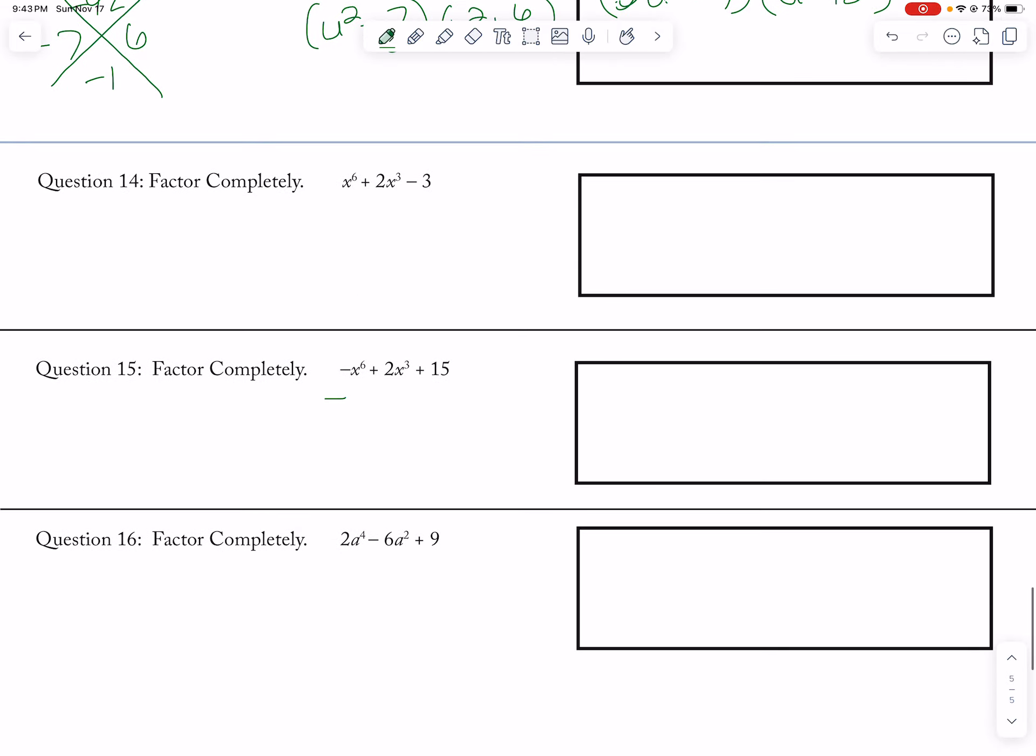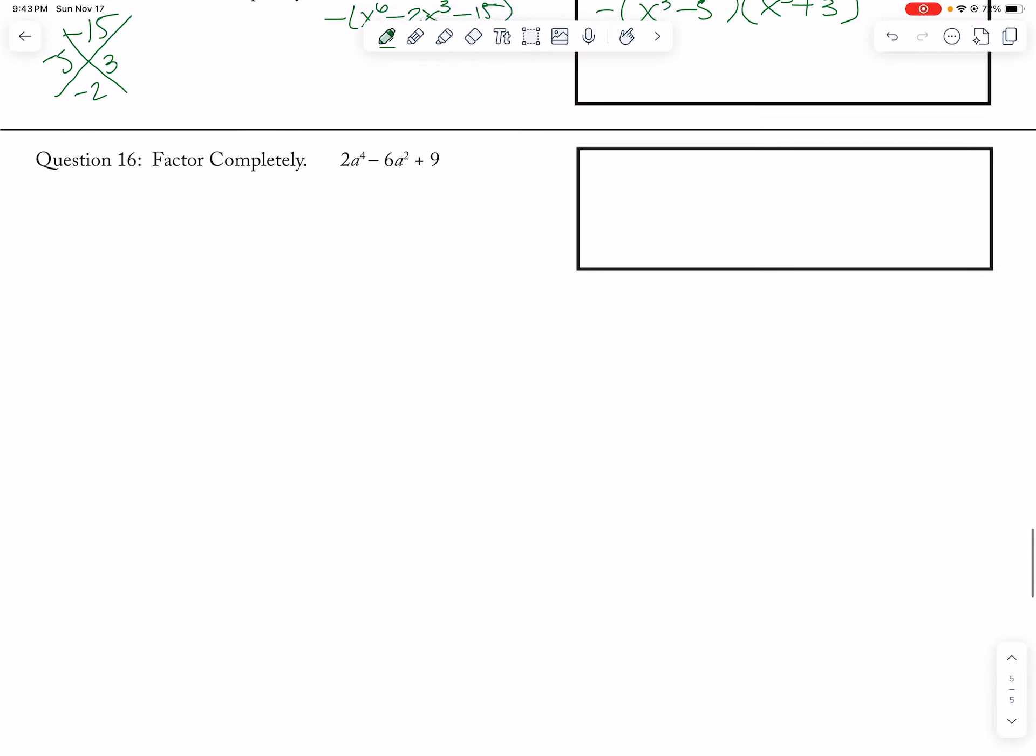And then I'm going to factor out a negative, so x to the 6 minus 2x cubed minus 15. And that doesn't factor in, oh yes it does. And then negative 15 and negative 2, which is a negative 5 and a positive 3. So this is a negative x cubed minus 5 and an x cubed plus 3. Alright, and that's it for the odd number questions.